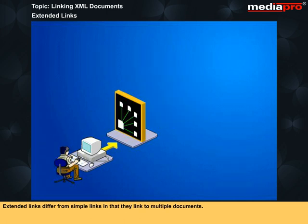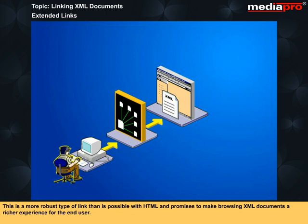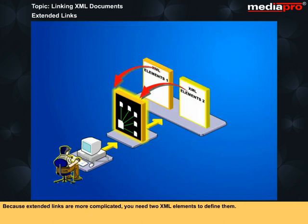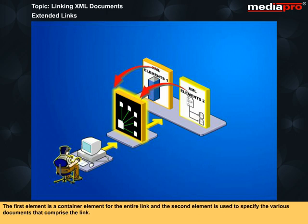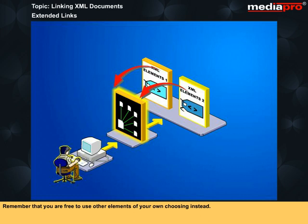Extended links differ from simple links in that they link to multiple documents. This means when users click on an extended link, they should be presented with a selection of documents to load rather than just one. This is a more robust type of link than is possible with HTML and promises to make browsing XML documents a richer experience for the end user. Because extended links are more complicated, you need two XML elements to define them. The first element is a container element for the entire link and the second element is used to specify the various documents that comprise the link.